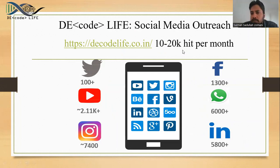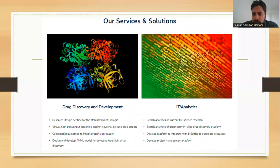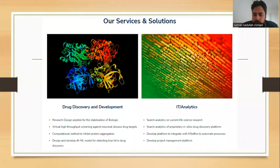We have a great social media outreach. Our domain gets 10,000 to 20,000 hits per month. We are more active on LinkedIn and WhatsApp groups. Two to three months ago we started outsourcing services — if you are working in drug discovery and development, peptide design for stabilization of biologics, high throughput screening against neuronal disease, or methods to inhibit protein aggregation, you can contact us.